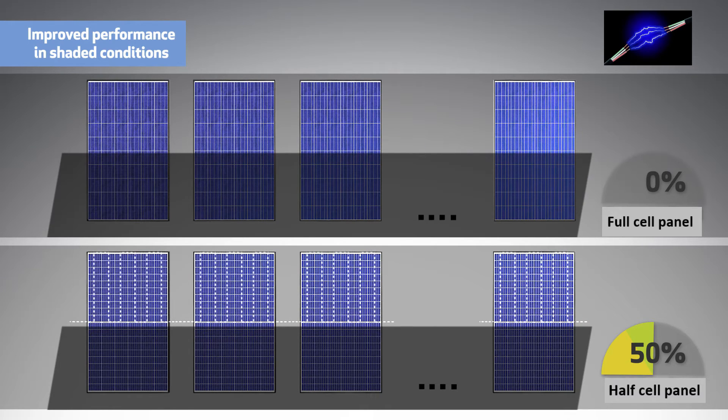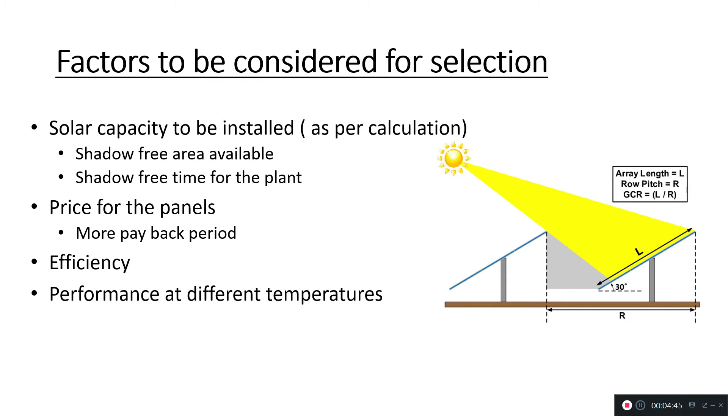Whereas if you use half-cut cell panels, as you can see on your screen, it will perform 50 percent better. This is how you select panels based on your space constraint. When there is space constraint, either go for high capacity modules or reduce the pitch and use half-cut cell panels.